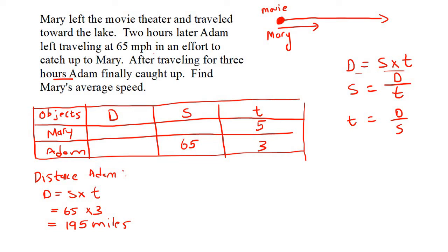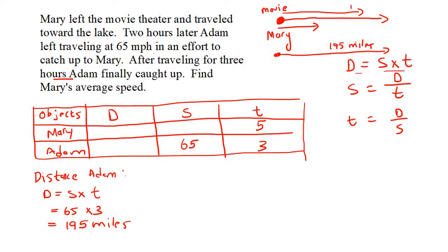Here's the part that some learners don't understand at first, but once I explain it they realize it makes sense. Adam leaves from the same place and drives 195 miles. At that point he has caught up to Mary — so how far did Mary drive? She also drove 195 miles. That's why he was able to catch up: they've reached the same distance. It wouldn't make sense if Mary traveled 160 and Adam 195 — that would mean he passed her. So they travel the same distance. With these catch-up questions, their distance will always be the same.